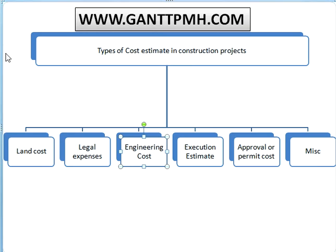In execution cost, we include manpower, machinery, and equipment cost. In manpower, we take project management, project engineers, labor, painters, blasters, machine operators, water supply, and many other things.